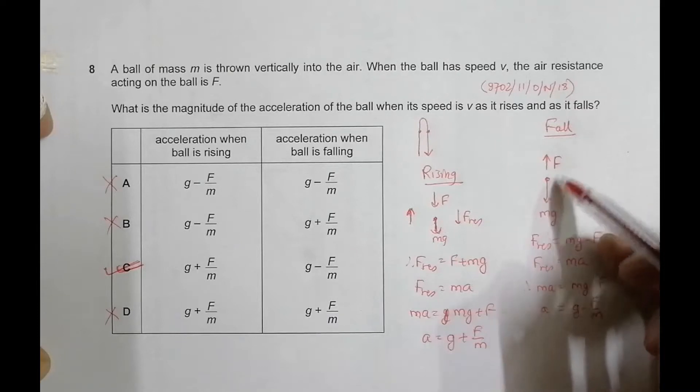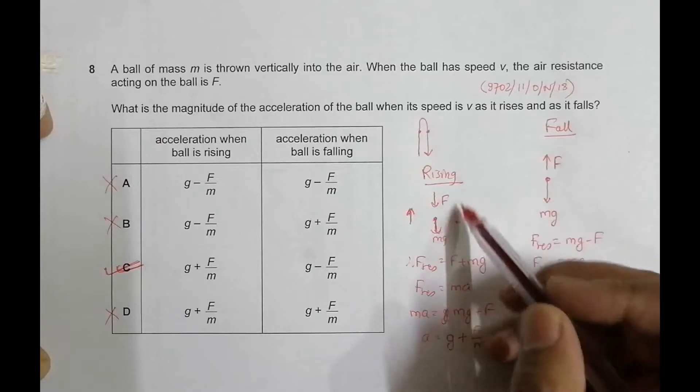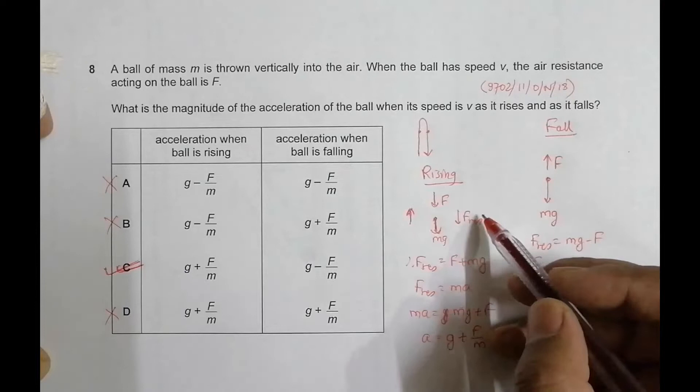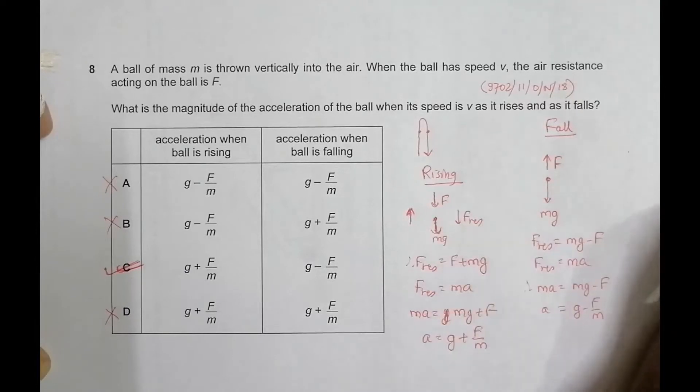So here the resultant force when we calculate it, F and Mg, Mg is more than F so resultant force should be towards Mg downward. Here it is Mg acting downward, F also acting downward so the resultant should definitely be acting downward. So in both of these cases...